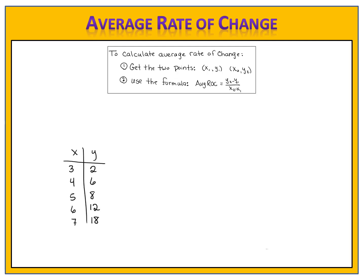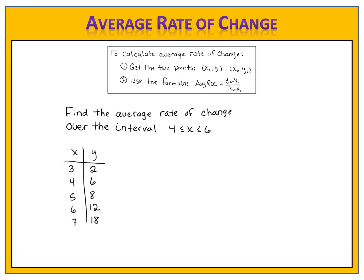Suppose you're given an input and output table, sometimes called a table of values, and you're asked to find the average rate of change over a certain interval — in this case when x goes from 4 to 6. The key to finding your two points is this interval. Those two numbers, the 4 and the 6, are x values or inputs.